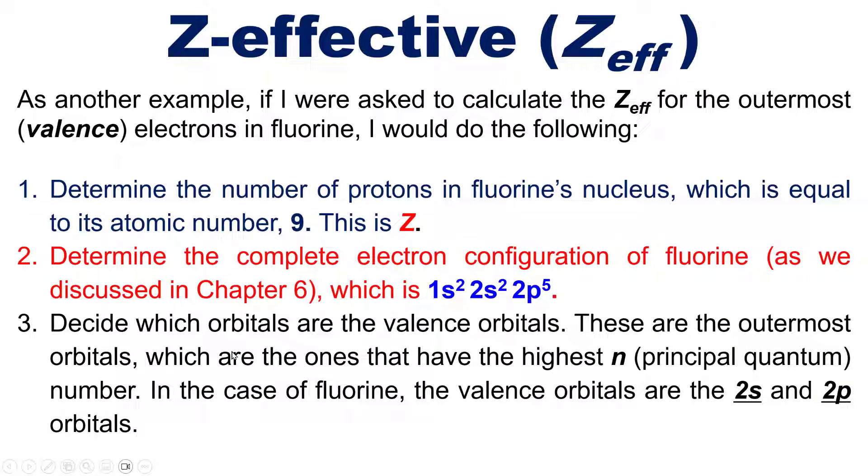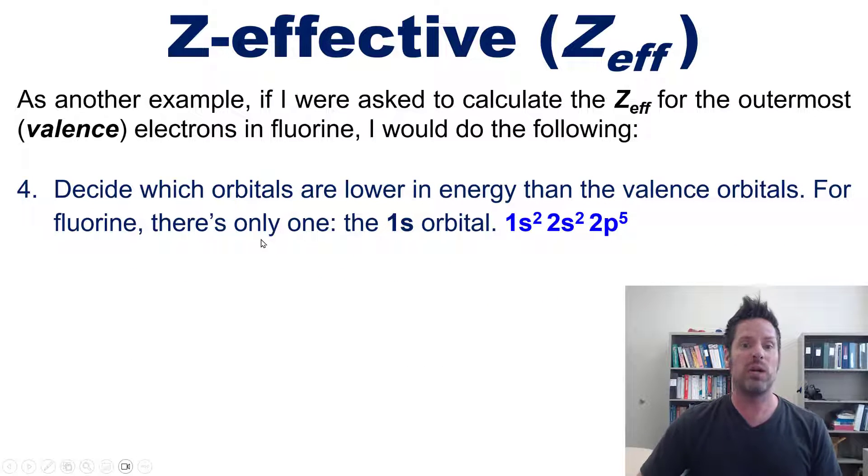Next, I decide which orbitals are the valence orbitals. Which of these orbitals—the 1s, 2s, or 2p—are the valence or outermost orbitals? The valence orbitals have the highest n or principal quantum number. For fluorine, the valence orbitals are the 2s and 2p.